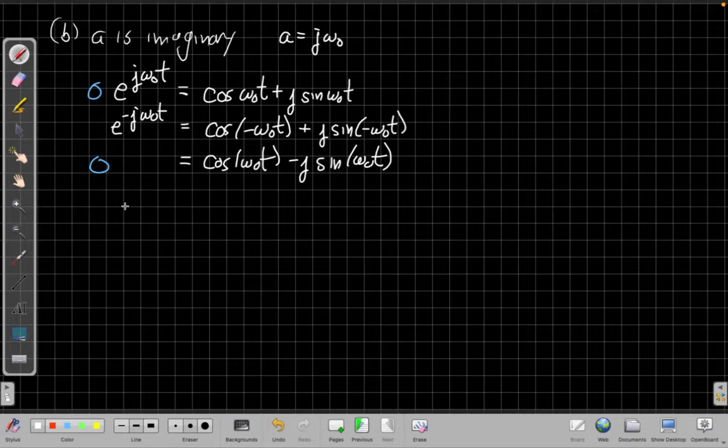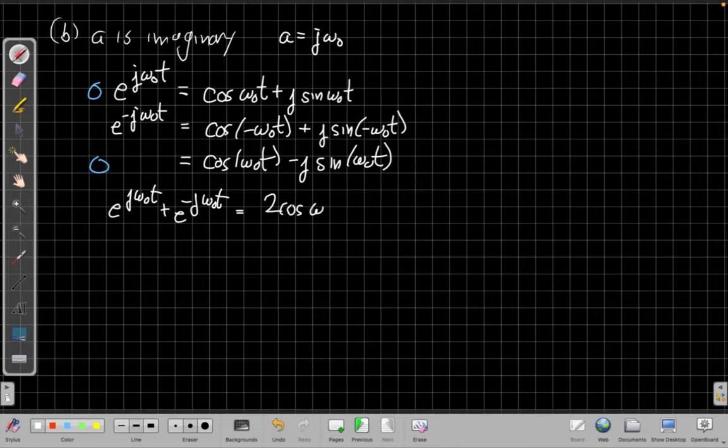If I add this equation to this equation here, the two cosines will reinforce, the two sine terms will cancel each other out. So if I add these together, I'll get e^(jω₀t) + e^(-jω₀t). And on the other side, when I add them, I'll have cos plus cos, I'll get 2 cos(ω₀t).